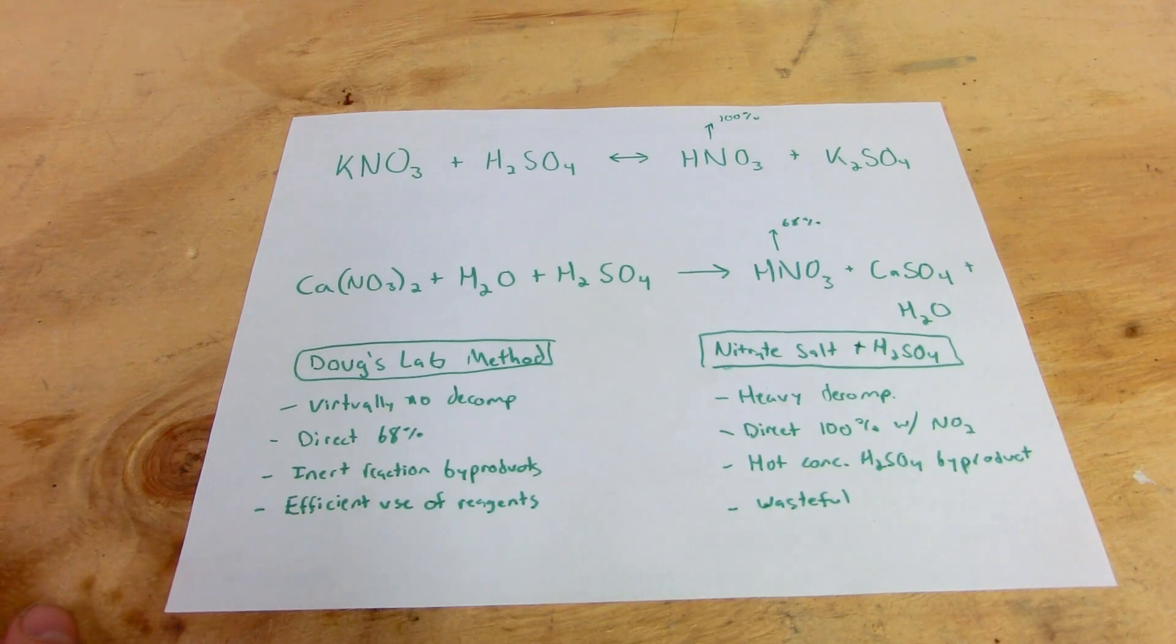Hi everybody, welcome to another Doug's Lab video. In this video, I'm going to show you how to make nitric acid at 68% concentration using a nitrate salt and sulfuric acid.